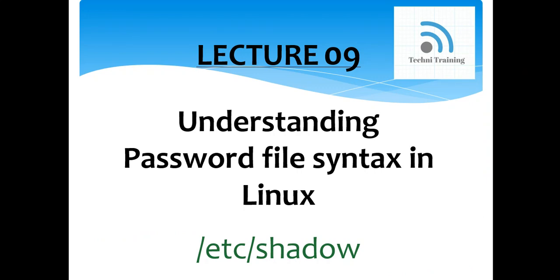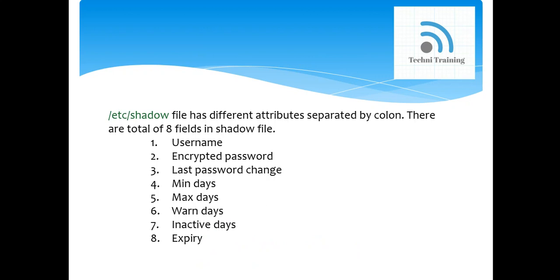We will study the shadow file, which comes under the /etc directory. Unlike the password file, the shadow file is not world-readable — it is an encrypted file that can be read only by the root user. Shadow file permissions are 400, meaning r---------, and ownership is root:root, so it can only be read by the root user.